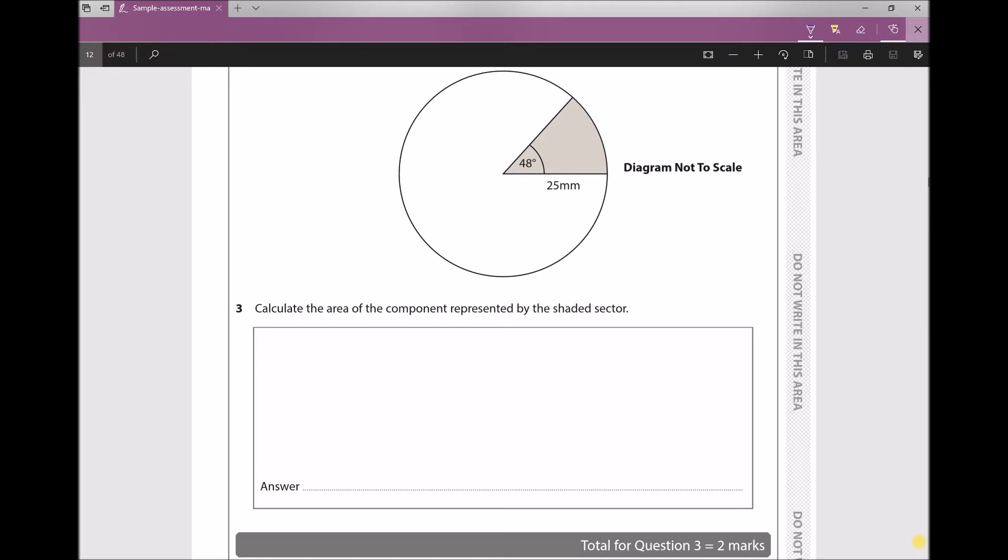This question is relatively straightforward providing we understand what it's asking us to do. It's asking us to calculate the area of the shaded sector in the diagram. We can calculate the area of the circle, and if we know the area of the circle we can then determine what proportion or what fraction of the circle is shaded.